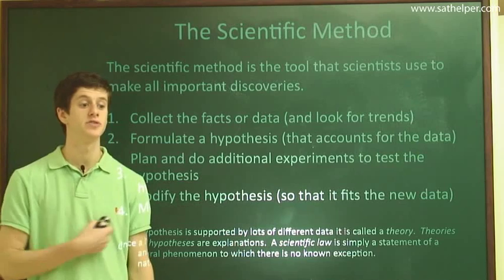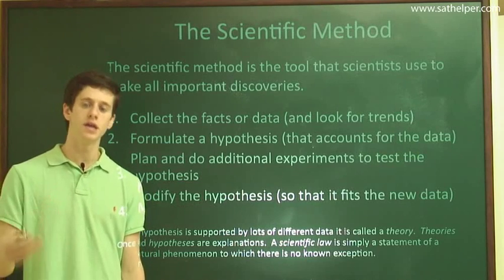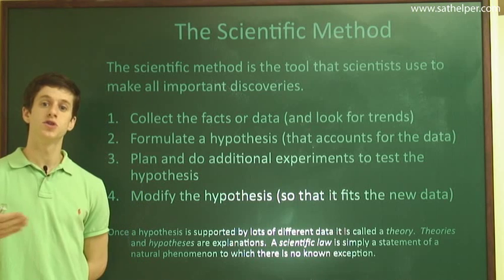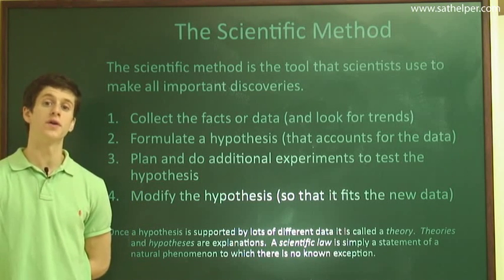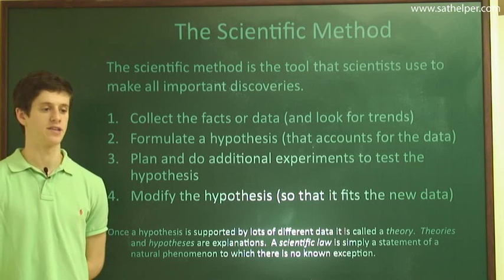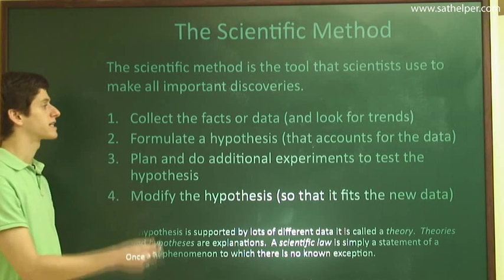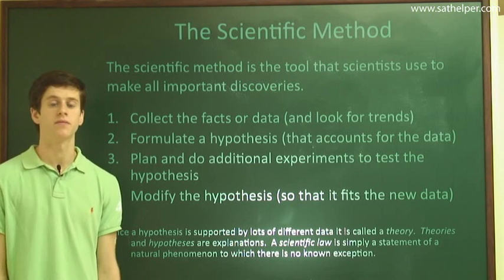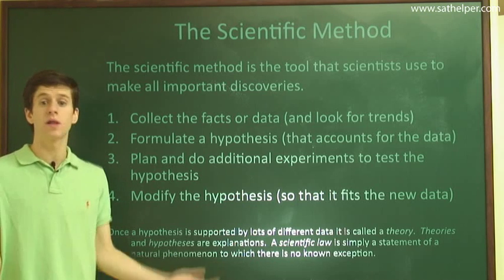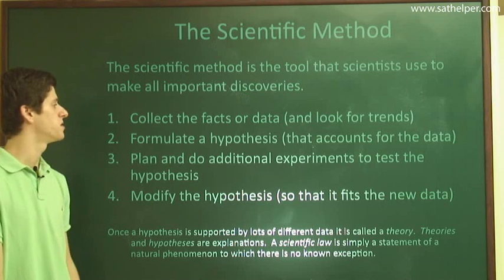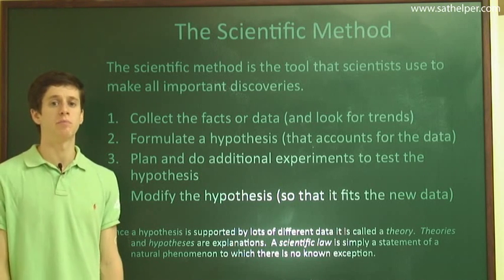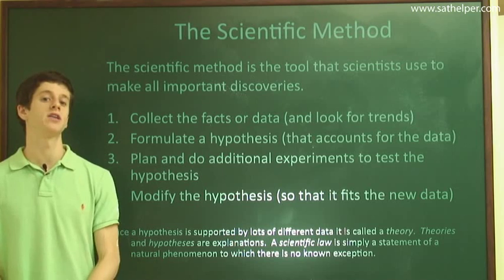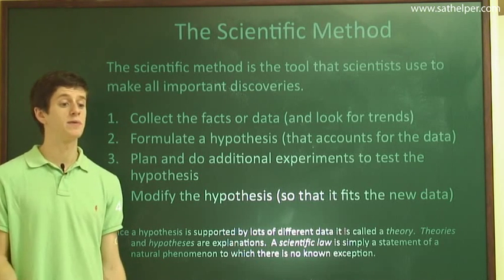The scientific method is the tool that scientists use to make all important discoveries. What it really is, is a process of refinement — starting from one point, doing an experiment, ending up at another point, and then repeating it over and over to constantly get a better and better answer. Where you start is by collecting facts or data. You look at the world around you — maybe you notice that the lake is blue and you ask yourself why. All the lakes of the world seem to be blue. So you formulate a hypothesis — maybe there's something in the water that makes the lake blue, maybe it's a dye or something like that. You form an idea to explain your observation. The third step is to do additional experiments.